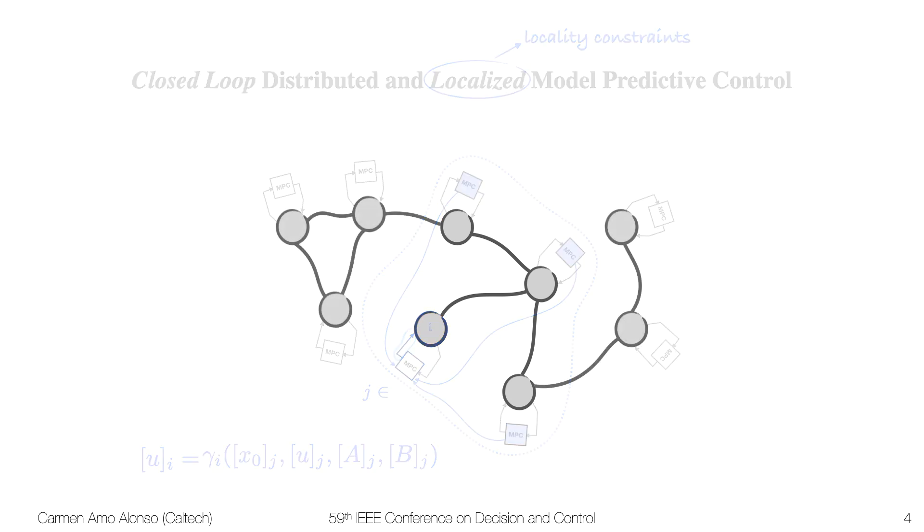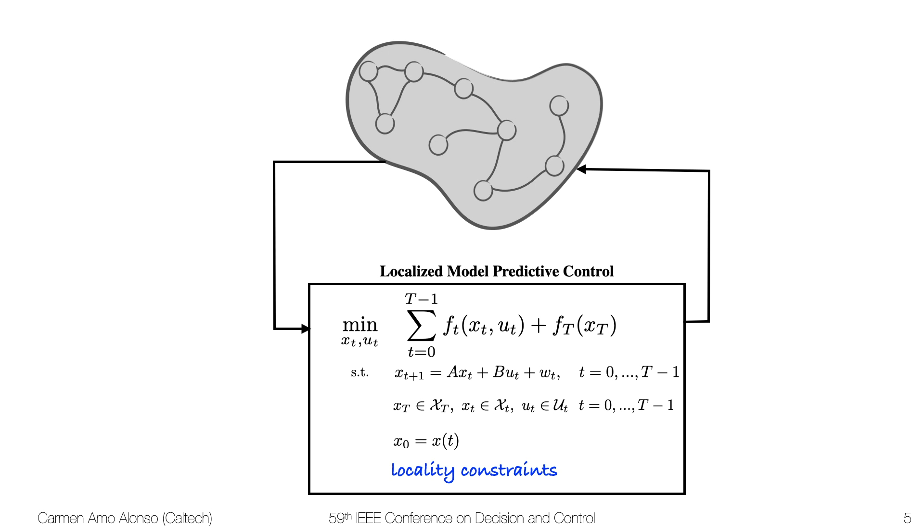If we go back to the setting that we had, by imposing locality constraints we would be capturing the structure of the network. However, imposing locality constraints is a hard problem because we're restricting the dependencies of the decision variables.